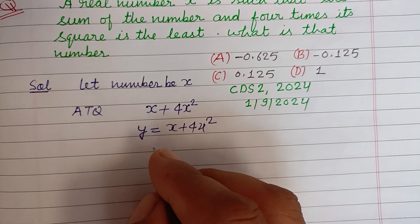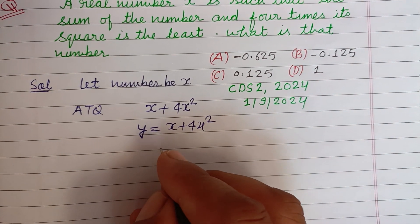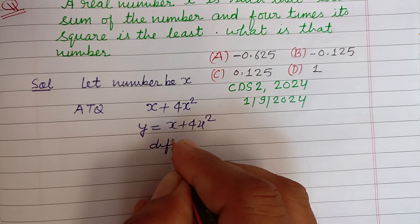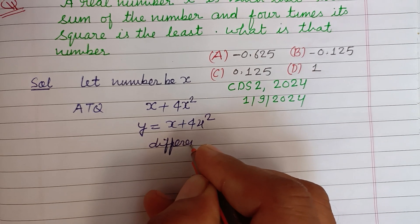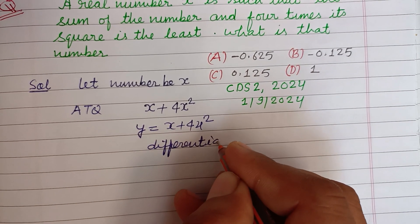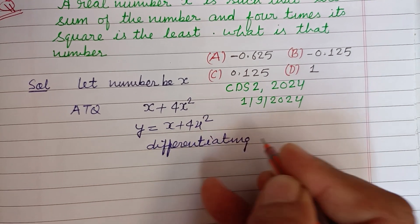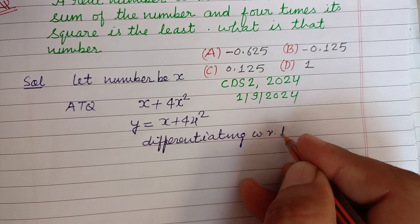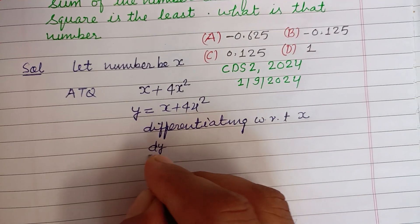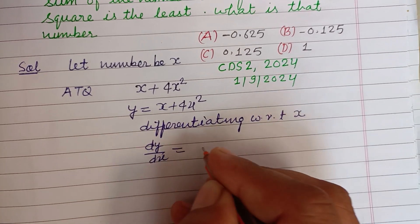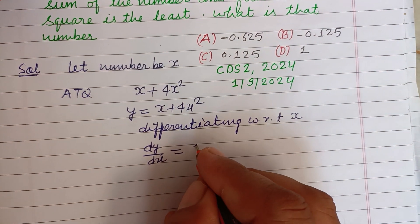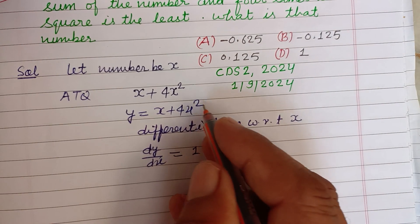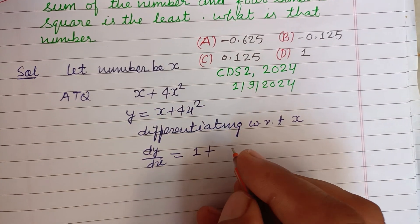So differentiating with respect to X, this is dY/dX equal to differentiation of X is 1, and X squared is 2, so 2 into 4 is 8X.